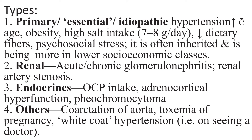Types of hypertension: Primary essential — the greatest part of hypertension — increases with age, obesity, high salt intake, decreased dietary fibers, and psychosocial stress; it is often inherited and more prevalent in lower socioeconomic classes. Renal causes include acute or chronic glomerular nephritis and renal artery stenosis. Endocrine causes include OCP intake, adrenocortical hyperfunction, and pheochromocytoma. Others include coarctation of the aorta, toxemia of pregnancy, and white coat hypertension — i.e., on seeing a doctor.